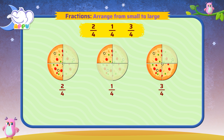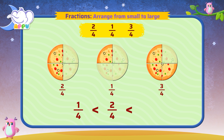So let's arrange them from smallest to largest. 1 part out of 4 is the smallest. Then 2 parts out of 4. Lastly, 3 parts out of 4. Fantastic!